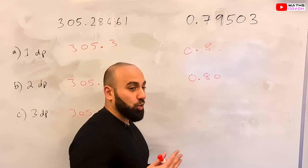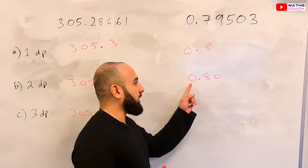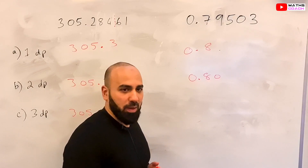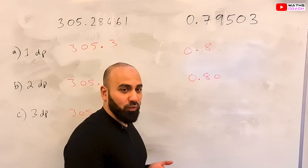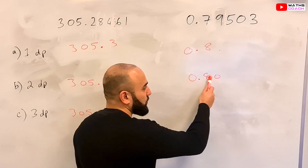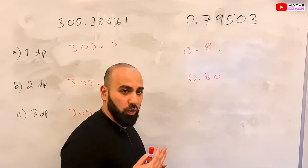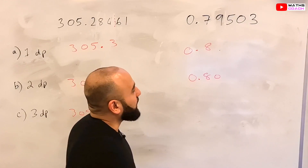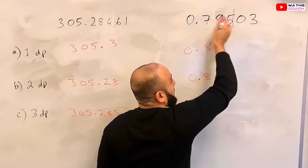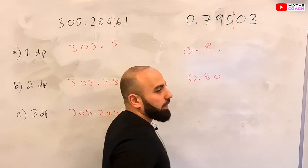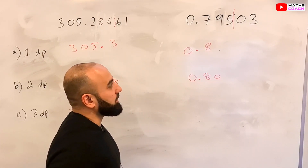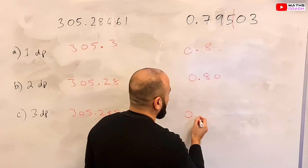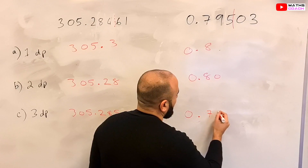You might ask why we write 0.80 and not just 0.8, since they're the same number. But the question asks us to write our answer to two decimal places, so we need two numbers after the decimal point — it's important to keep the zero there. To three decimal places, we draw a line after the third digit after the decimal point and look at the number next to it. This number is less than 5, so we keep this number the same. We would write 0.795.